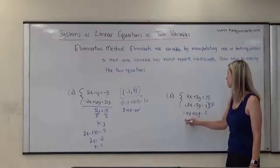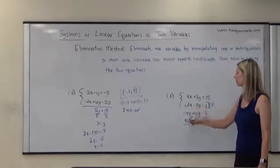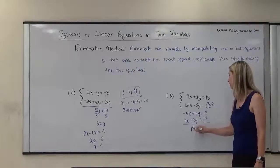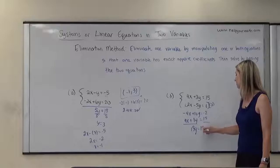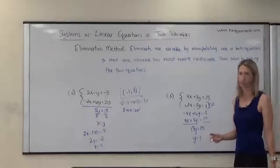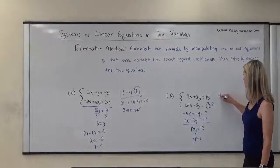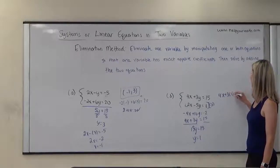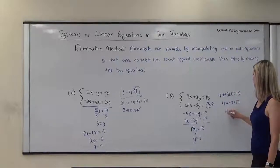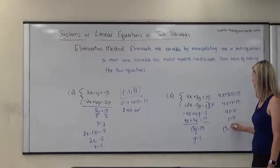I'm going to bring down my top equation: 4x plus 3y equals 15. Then from here, we're going to add them together. Negative 4x plus 4x is 0. 10y plus 3y is 13y. And negative 2 plus 15 is 13. If I divide both sides by 13, I see that y is equal to 1. Now I need to determine the x coordinate — I'll plug 1 into the top equation: 4x plus 3 times 1 equals 15, so 4x plus 3 equals 15, then 4x equals 12, and x equals 3. So the solution to this system would be 3, 1.